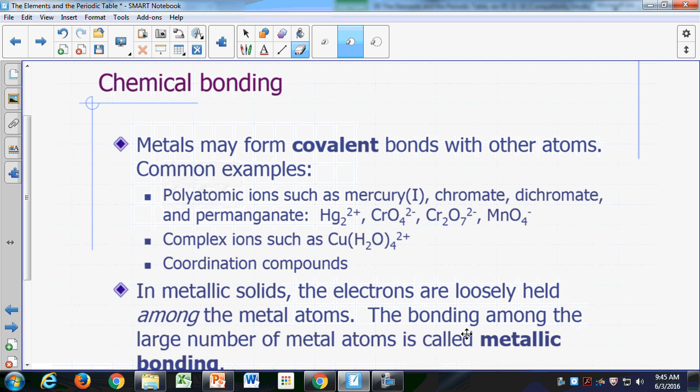All right, so we've seen that metals plus non-metals have a tendency to form ionic bonds. Metals lose electrons, become positive ions. Non-metals gain electrons to form negative ions, and the positive and the negative ions are attracted to each other.